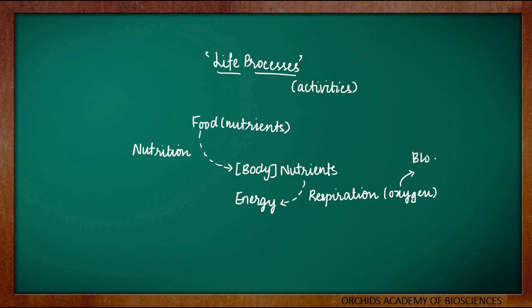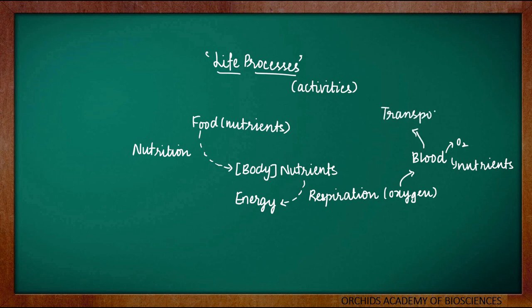Oxygen is transported throughout the body through blood. Blood not only carries oxygen, but also nutrients and various other important substances. The oxygen, the nutrients and various other important substances are transported to various other parts of the body through blood, and this is called as transportation. Transportation is the process by which a substance which is available in one part of the body or which is made in one part of the body is transported to various other required parts of the body. And here comes the third life process.